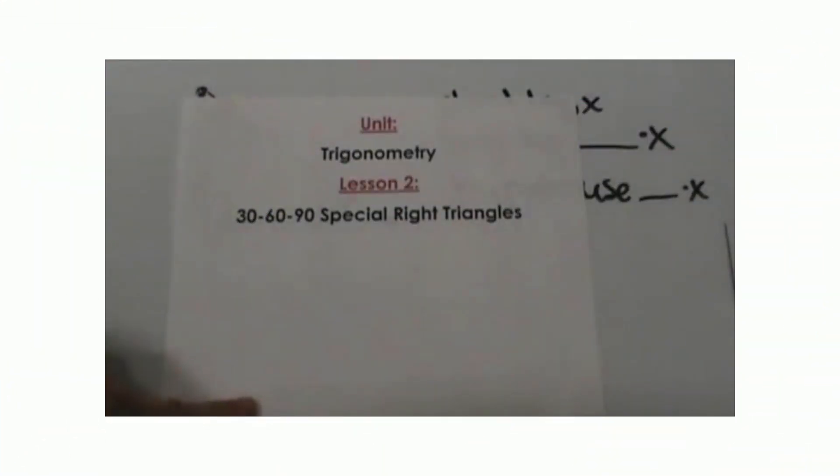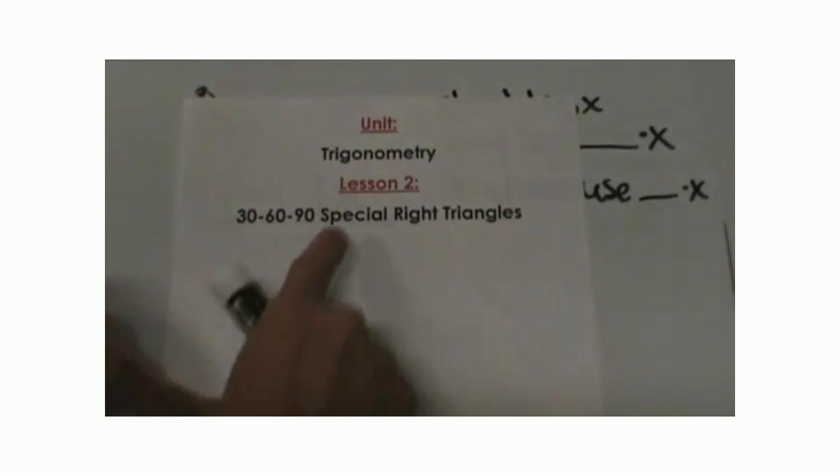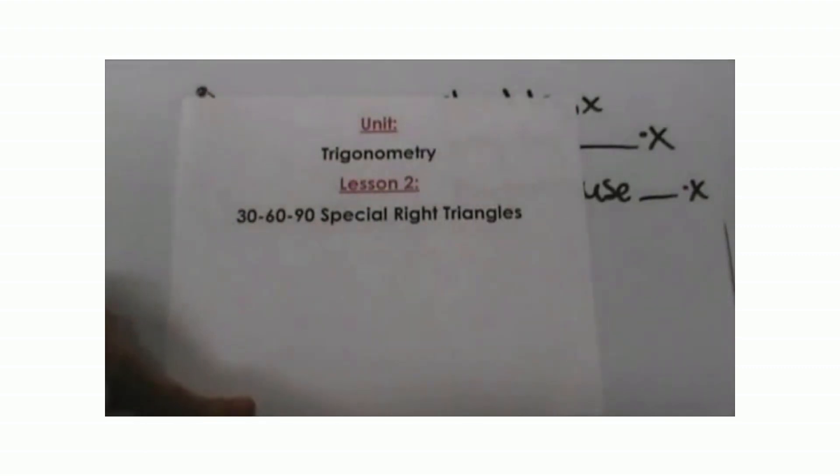Hey, welcome to the trig unit lesson 2 on 30-60-90 right triangles. This is a special right triangle. What makes it special is that every 30-60-90 triangle is similar to one another, so they have these same patterns.